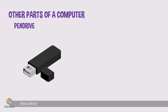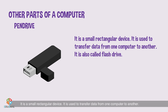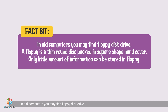Pen Drive. It is a small rectangular device used to transfer data from one computer to another. It is also called a flash drive. Factbit: In old computers, you may find a floppy disk drive. A floppy is a thin, round disk packed in a square-shaped hard cover. Only a little amount of information can be stored in a floppy.